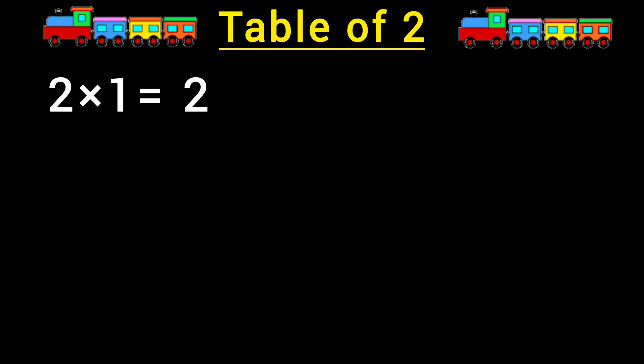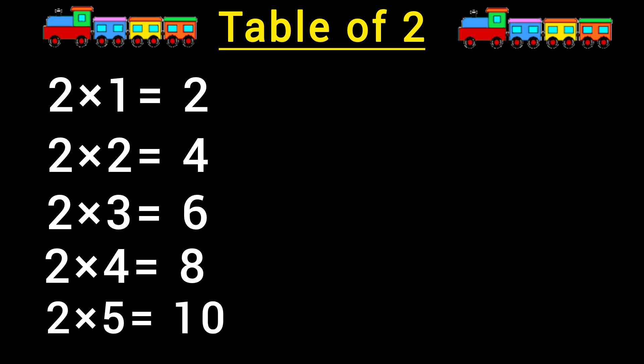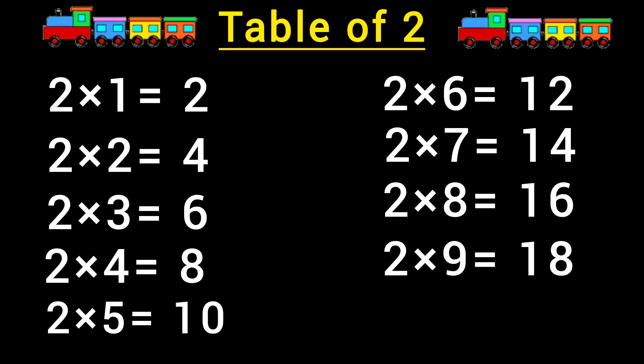Two ones are two, two twos are four, two threes are six, two fours are eight, two fives are ten, two sixes are twelve, two sevens are fourteen, two eights are sixteen, two nines are eighteen.